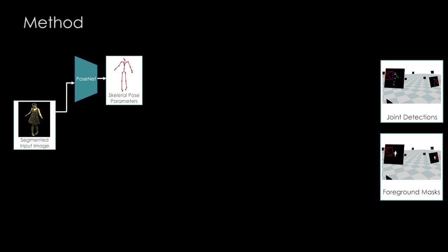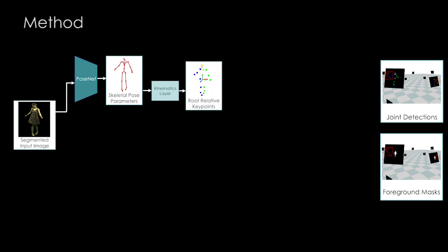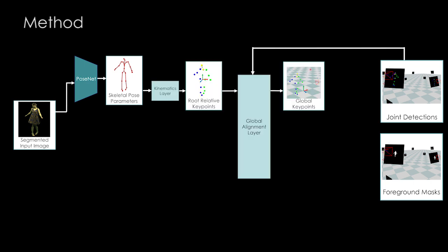Given the segmented frame, our first network, PoseNet, predicts the joint angles and the camera-related rotation of the skeleton. It relies on a kinematics layer, a global alignment layer, and a projection.